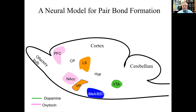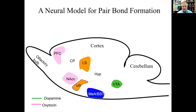Dopamine is involved in reinforcement learning, and oxytocin is involved in the perception of social stimuli. Here's what I think is happening when an animal mates. A male rat is mating for the first time. When he is finally successful, somatosensory stimulation from the genitals activates the VTA, and dopamine is released in the prefrontal cortex and nucleus accumbens — that's what makes sex rewarding. A rat will press a lever many times to get a female to drop from the ceiling so they can mate.